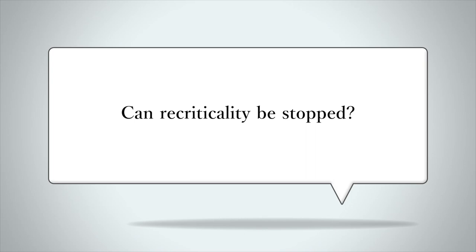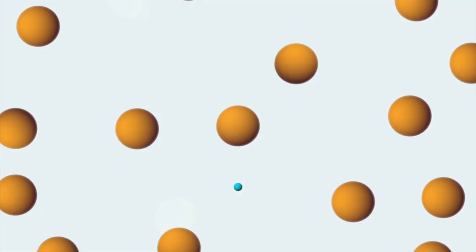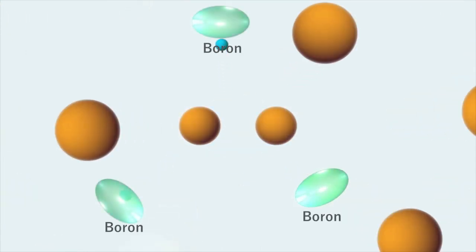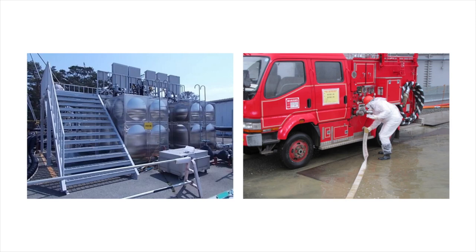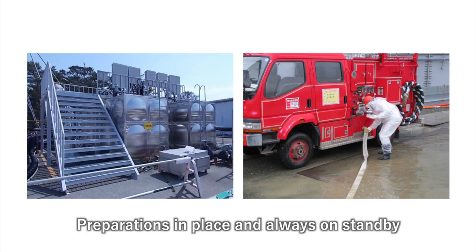Can recriticality be stopped if it occurs? Boron can suppress the chain reaction of nuclear fission by absorbing the neutrons. Therefore, boric acid solution tanks were installed at Fukushima Daiichi Nuclear Power Station to enable a response to recriticality at any time. In the event of station blackout during an earthquake, fire engines can also inject boric acid solutions into the reactors.